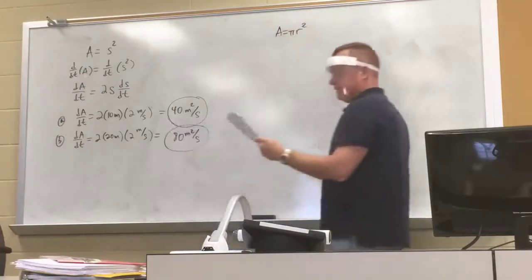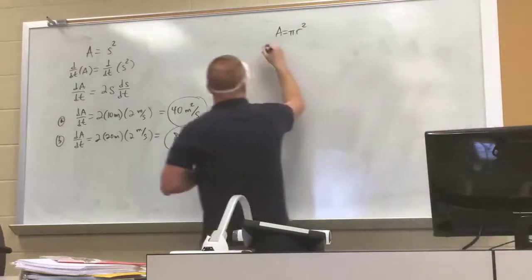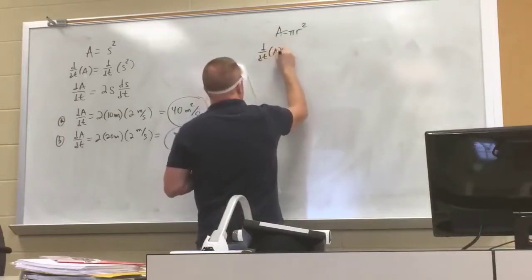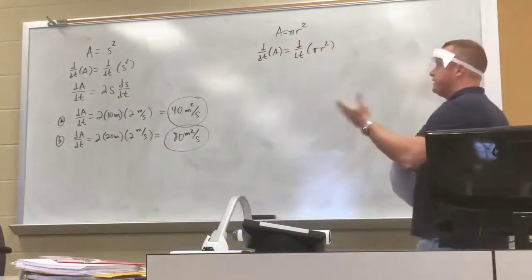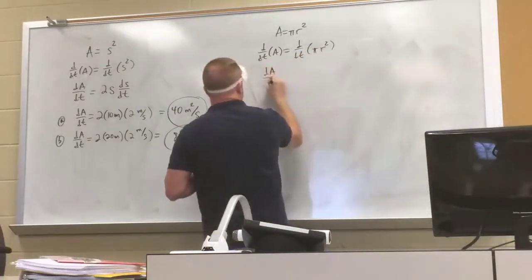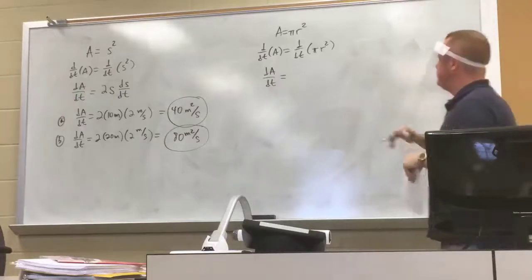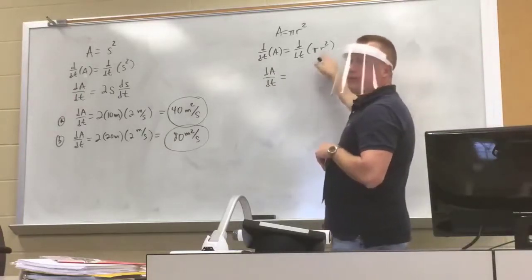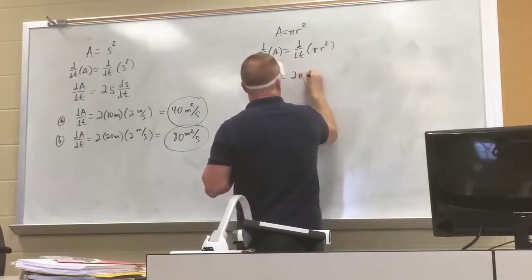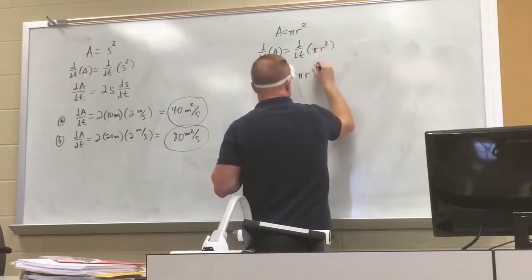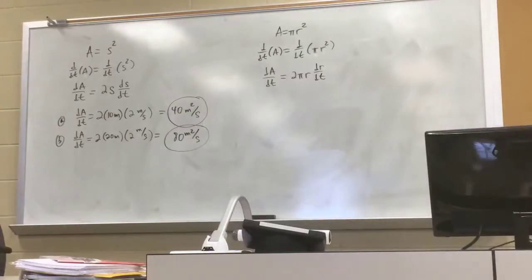Starting with A = πr², take the derivative with respect to time of both sides. On the left: dA/dt. On the right: pi is a constant, so using the chain rule we get 2πr · (dR/dt). That is our differentiated formula: dA/dt = 2πr · (dR/dt).